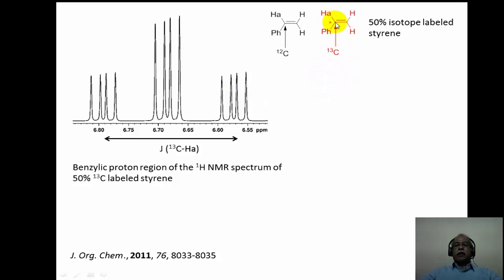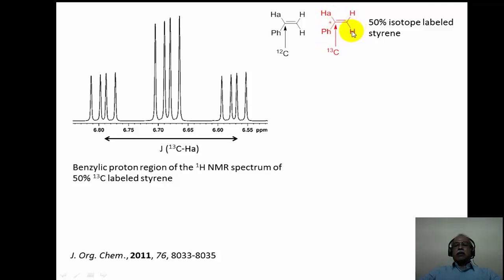For the carbon-13 labeled 50% styrene, 50% of the molecule has a carbon-13 at the alpha position, which couples with HA into a large doublet. Further, HA is split by the cis hydrogen and by the trans hydrogen — giving a doublet of a doublet of a doublet: an 8-line pattern. This illustrates that synthetic carbon-13 labeling enables much more prominent observation of satellite spectra compared to natural abundance carbon-13.